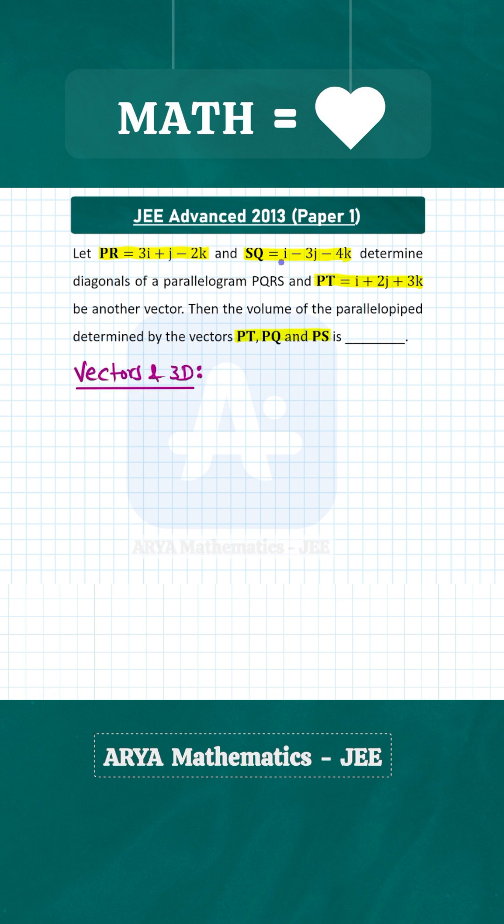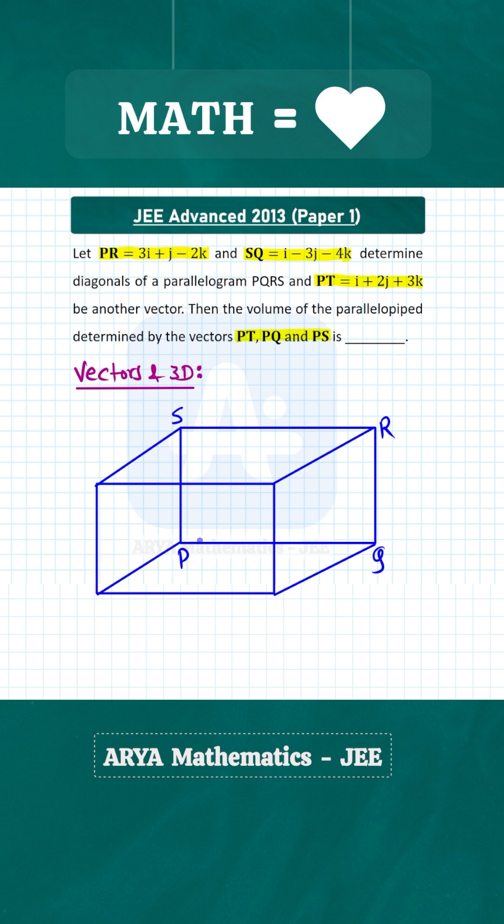First let us draw the parallelepiped formed by these vectors. Let us say one face of this parallelepiped is PQRS. In a parallelepiped, each face will be a parallelogram and this angle is not necessarily 90 degrees. Now here vector PR is given and SQ is given. Let us call this point T. So this is our vector PT.